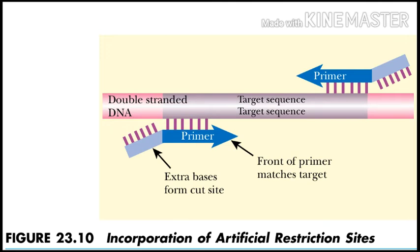The bases making up the restriction site get copied and appear on the ends of all newly manufactured segments of DNA after the PCR reaction has been run. The PCR fragment is then cut with the chosen restriction enzyme to generate sticky ends, and the fragment is cloned into a convenient plasmid.